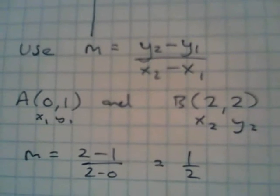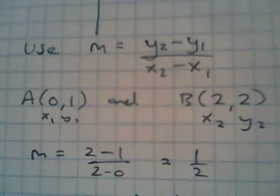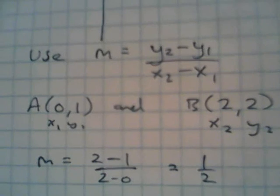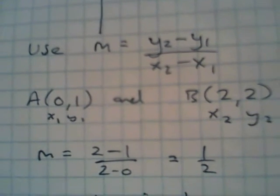Here we've just applied the formula, y2 minus y1 over x2 minus x1, and you get m is a half. So that's the slope of this line.